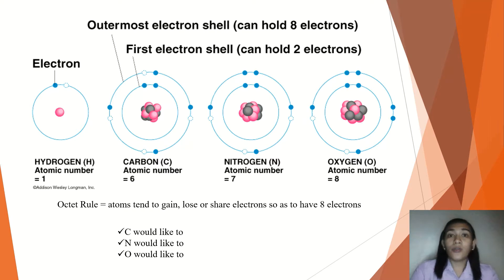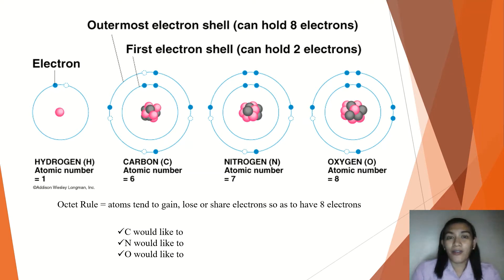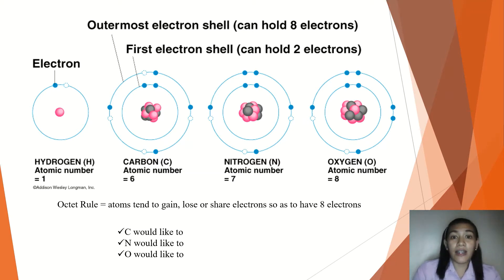According to the octet rule, atoms tend to gain, lose, or share electrons so that they could have eight electrons in total. Carbon has four outermost electrons, so it needs four more electrons. Carbon would like to gain four electrons. For nitrogen, its atomic number is seven, so it has two core electrons and five outermost or valence electrons. Therefore, nitrogen would like to gain three electrons.